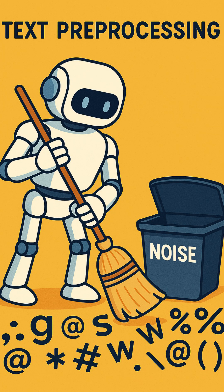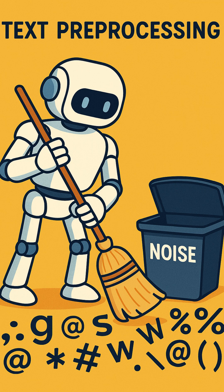What is text preprocessing? Text preprocessing is a process of cleaning and transforming raw text into a format that machine learning algorithms can understand. Just like you tidy up a messy desk before working, preprocessing tidies up text data.